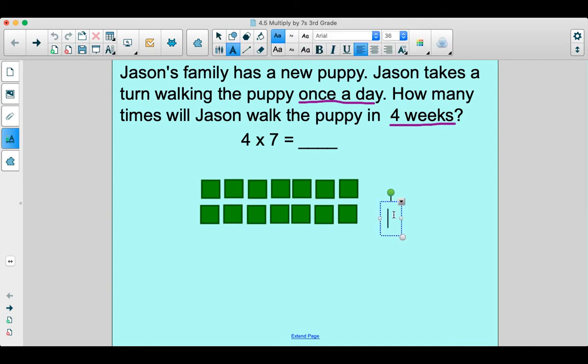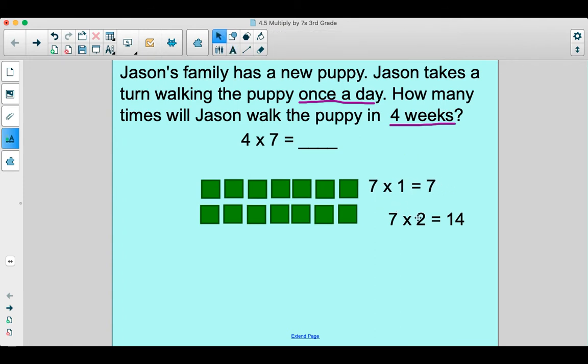So 7 × 2 = 14. Let's go ahead and throw in the 7 × 1 = 7, too. Why not? So we've got 7 × 1 is 7. Two groups of seven makes 14.